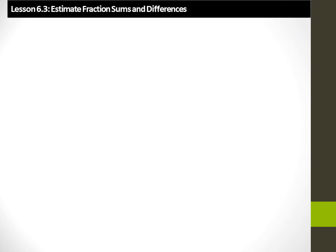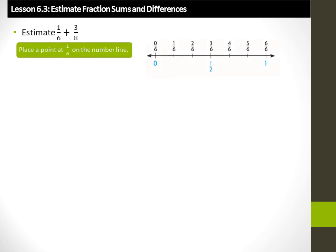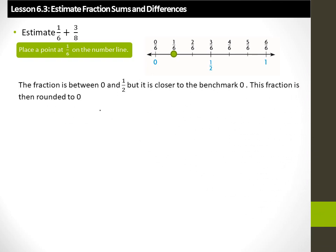Estimate fraction sums and differences. Let's estimate 1 over 6 plus 3 over 8. First, place a point at 1 over 6 on the number line. The fraction is between 0 and half, but it is closer to the benchmark 0. This fraction is then rounded to 0.